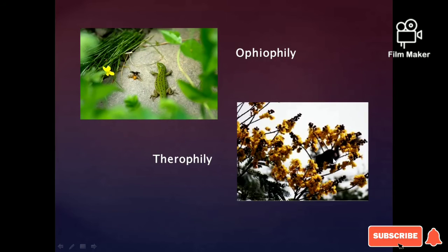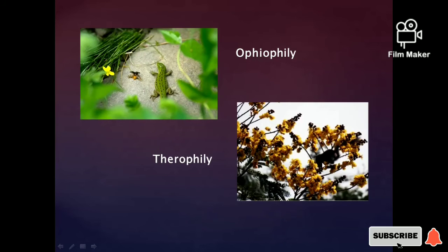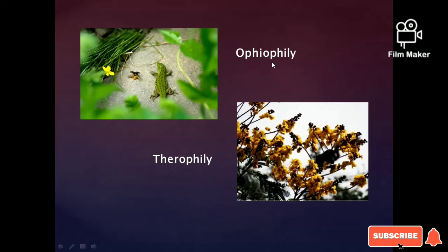Chiropterophily involves pollination by bats and squirrels, which can transfer pollen grains from flower to flower. Next is ophiophily, which means pollination by lizards, snakes, and similar reptiles.